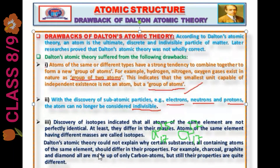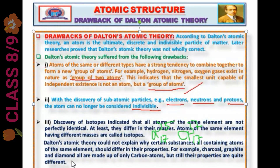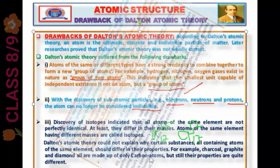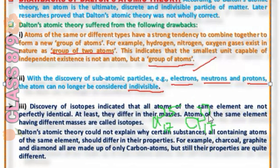Dalton atomic theory could not explain why certain substances, all containing atoms of the same element, should differ in their properties. For example, charcoal, graphite, and diamond are all made of only carbon atoms, but still their properties are quite different. For instance, graphite conducts electricity. He could not explain this.